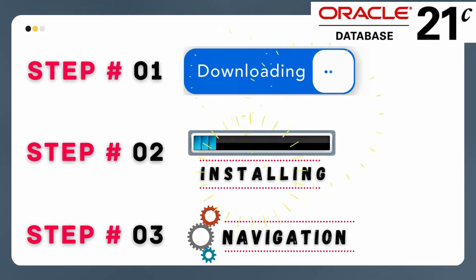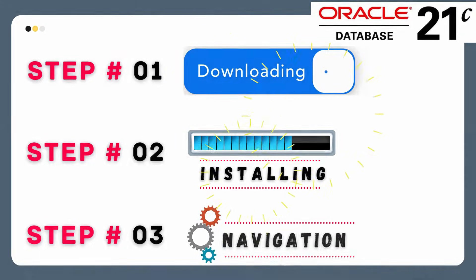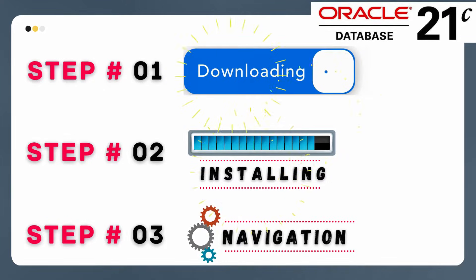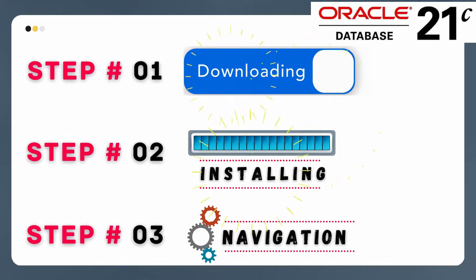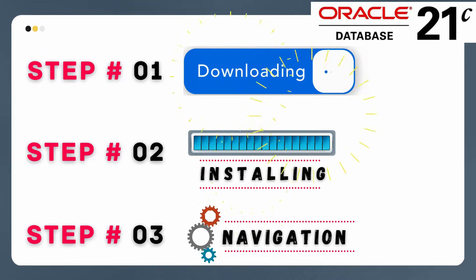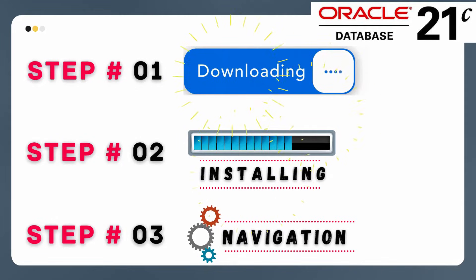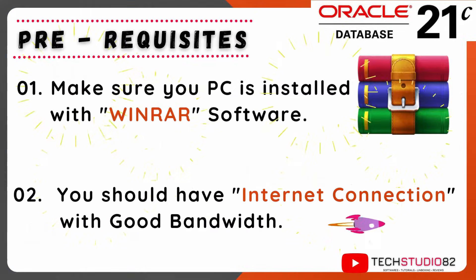This we are going to perform in three steps. In step one, we are going to download Oracle 21c Enterprise Edition software. In step two, we are going to install the downloaded software on Windows 11 operating system. In step three, we are going to walk through the installed applications by opening the SQL Plus shell terminal and the GUI web admin interface.